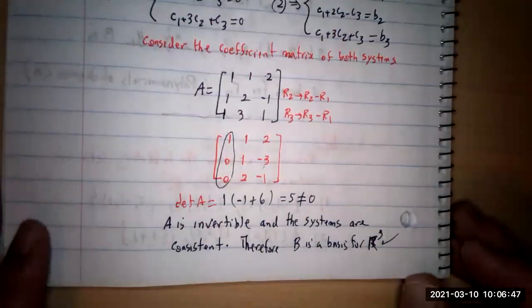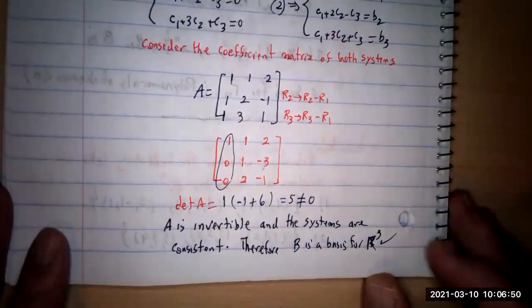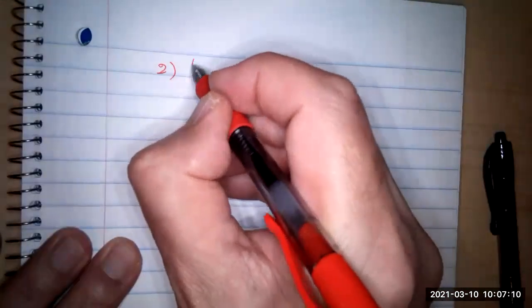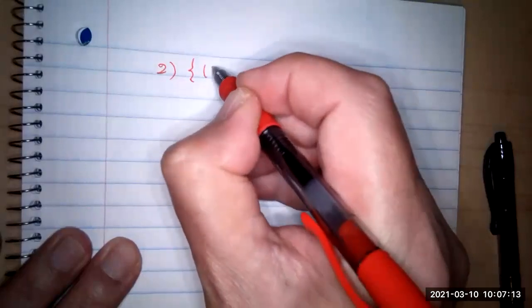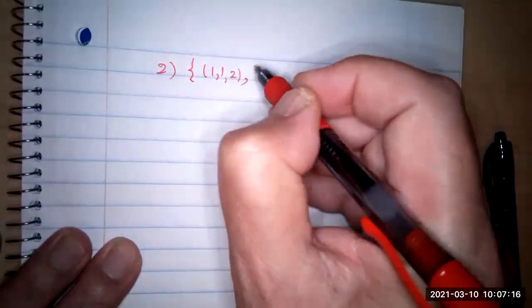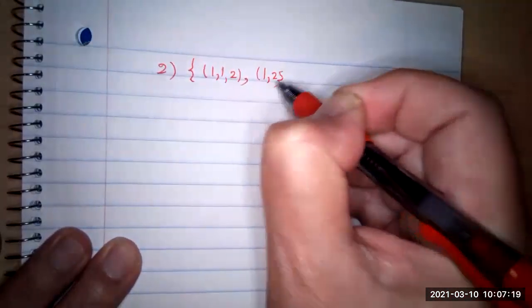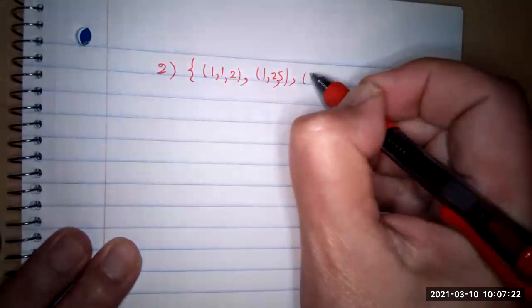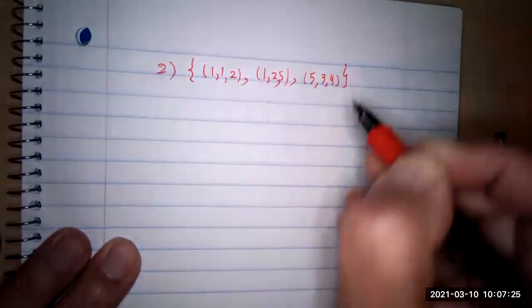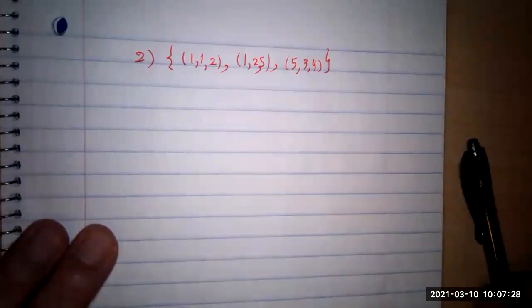This is the way you solve these problems — the same method as on the practice quiz. You don't need to solve the system explicitly; just focus on the matrix of coefficients. If the determinant is not zero, it's invertible, and both conditions are satisfied. Now checking the second part: the set of vectors is (1,1,2), (1,2,5), and (5,3,4).